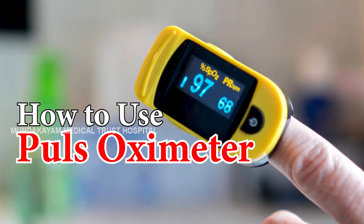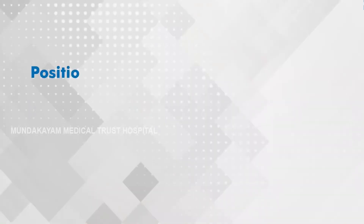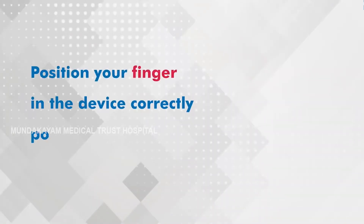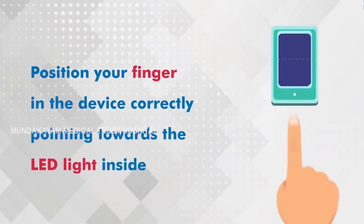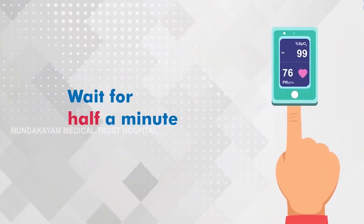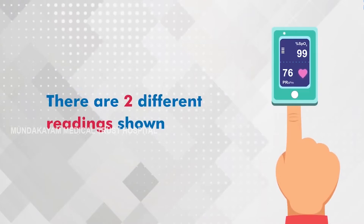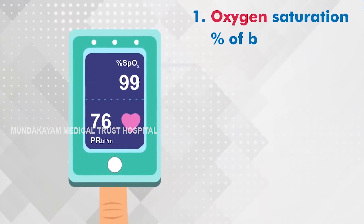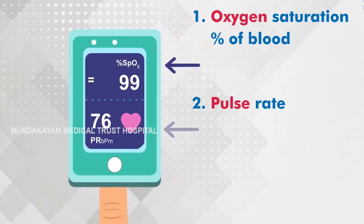How to use the pulse oximeter — the steps involved. Step 1: Position your finger in the device correctly, pointing towards the LED light waves. Step 2: Wait for half a minute. Step 3: There are two different readings shown — oxygen saturation level in the blood and pulse rate.